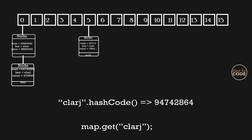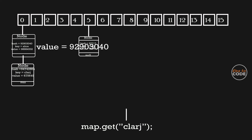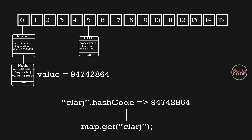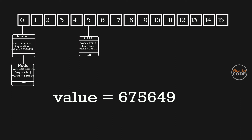Next we try with another key. The hash code is calculated using the hash code method, and the index is calculated from that hash code — here the index is 0. So we get the first node from index 0 and check its hash value. The hash values do not match, so it checks the next node's hash value. Here both hash values are the same, so it checks the key — both keys match, so it returns the value. This is how hash collision is handled internally.